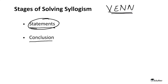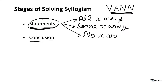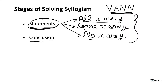Now let's get into statements. There are three important words when we talk about statements in syllogisms, and these are: all, some, and no. All as in 'all X are Y', some as in 'some X are Y', and no as in 'no X are Y'. And if you understand these three statements, half of our syllogisms is already done.